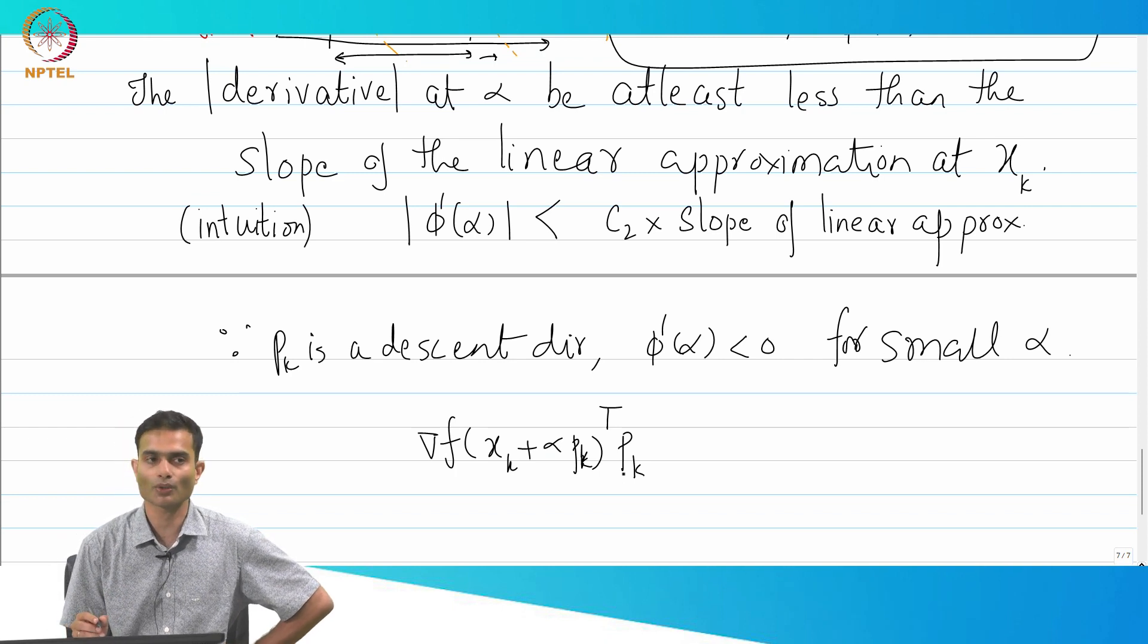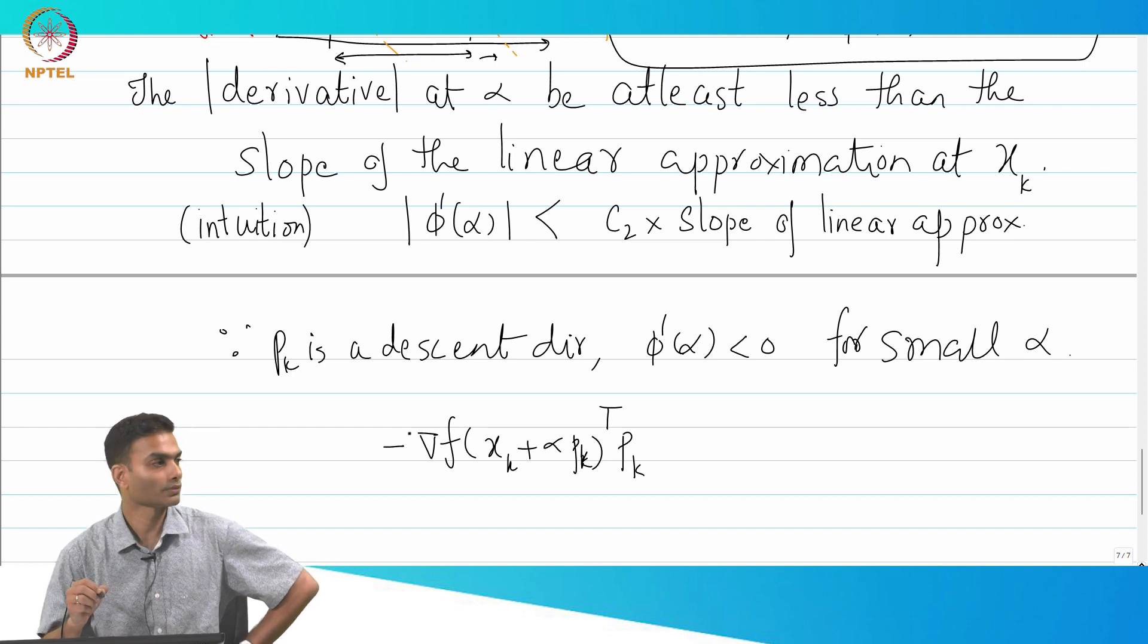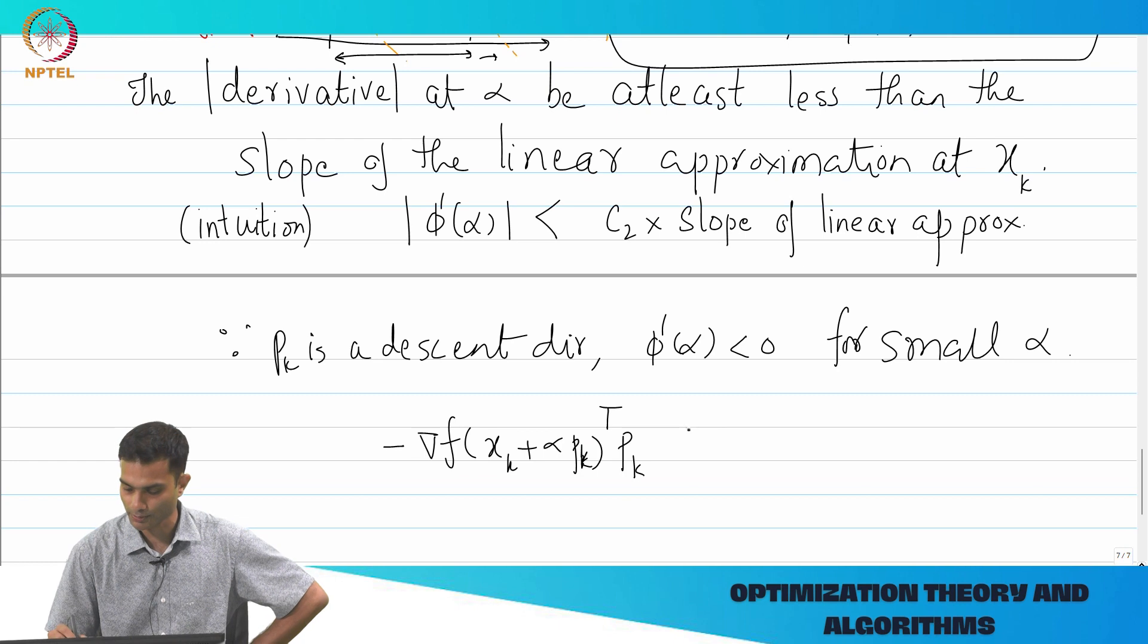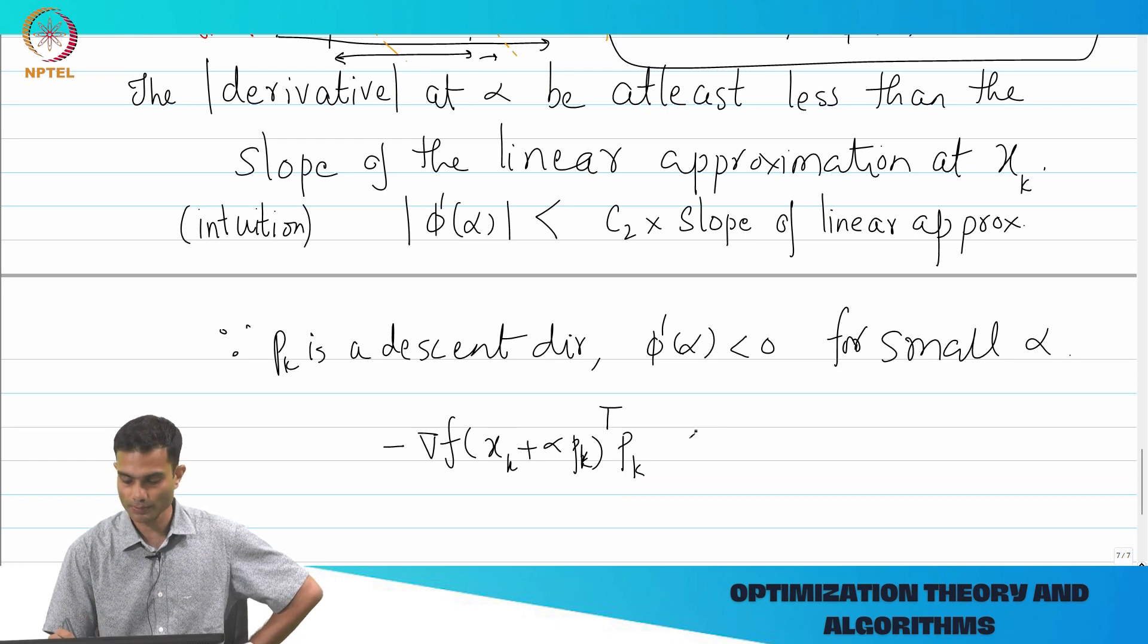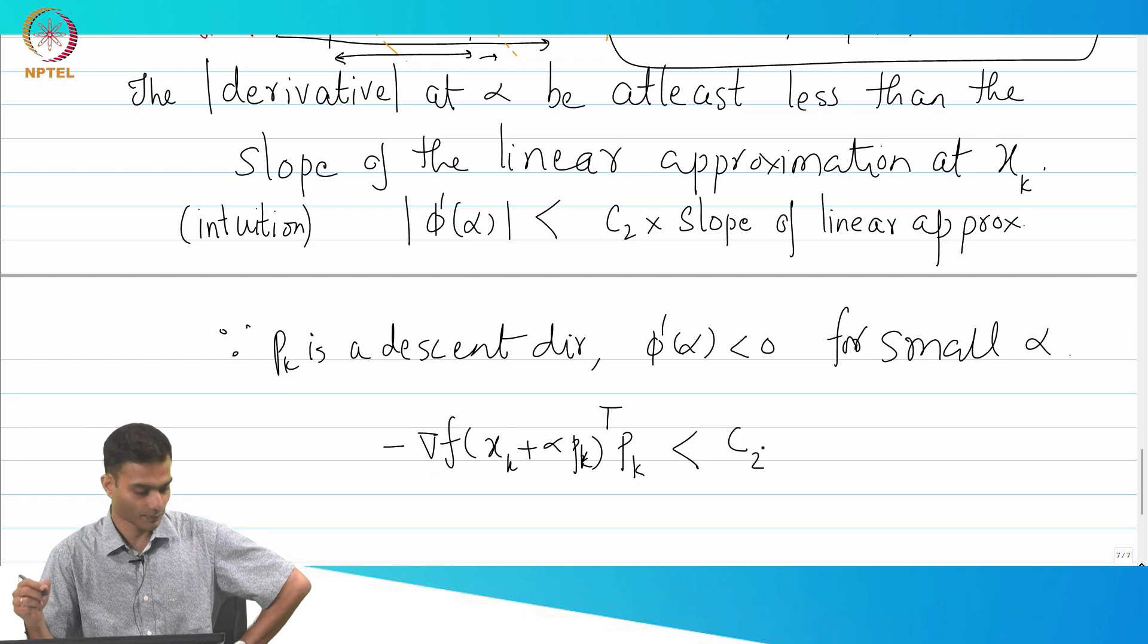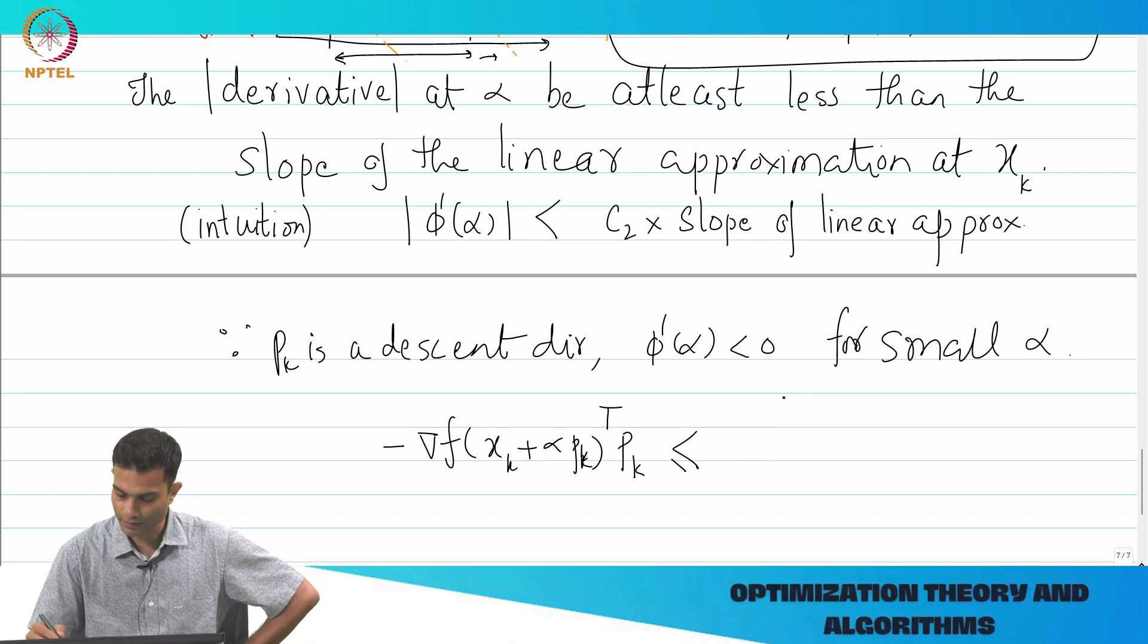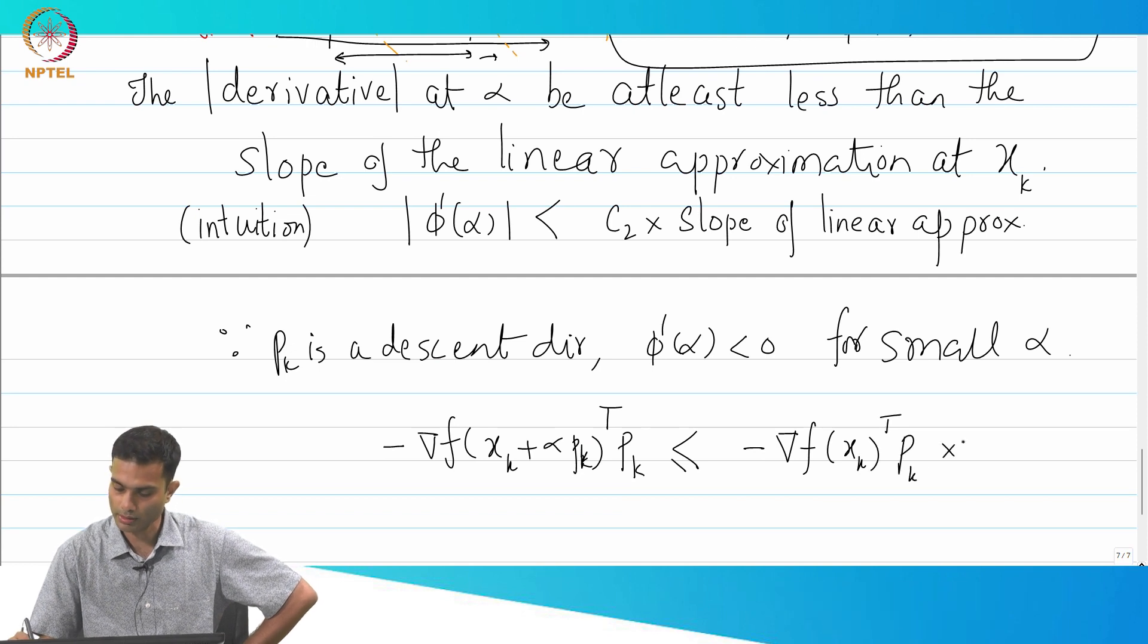So I want to make it a positive quantity. What should I do? Multiply by minus. This is the slope in terms of a positive number. So this should be less than C_2 times the slope of the linear approximation. Now, slope of the linear approximation is written as minus grad f(x_k) transpose p_k multiplied by C_2.